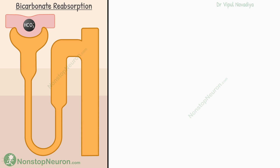Bicarbonate ions are freely filtered at the glomerulus. Then 80% is reabsorbed from the proximal tubule, 10% from the thick ascending limb, and 10% from the distal tubule and collecting duct. About 0.01% is excreted in urine.